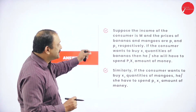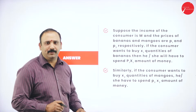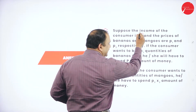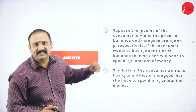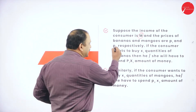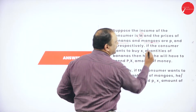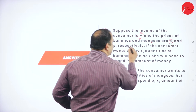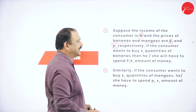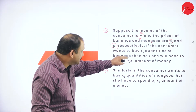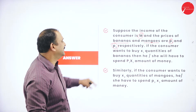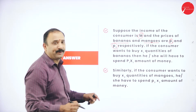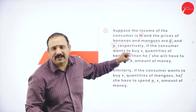Suppose the income of the consumer is M. The income is M and the prices of two products — bananas and mangoes — are given as P1 and P2 respectively. If the consumer wants to buy X1 quantities of bananas, he or she will have to spend P1 multiplied by X1 of the money.